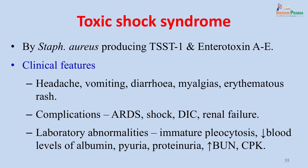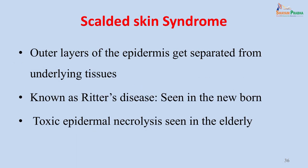Toxic shock syndrome is caused by Staphylococcus aureus producing toxic shock syndrome toxin-1 (TSST-1) and enterotoxins A–E. Clinical features include headache, vomiting, diarrhea, myalgia and erythematous rash. Complications can include acute respiratory distress syndrome, shock, DIC and renal failure. Laboratory abnormalities include immature pleocytosis, decreased albumin, pyuria, proteinuria, and increased blood urea nitrogen and CPK. In scalded skin syndrome, the outer layer of the epidermis gets separated from the underlying tissue — known as Ritter's disease in the newborn and toxic epidermal necrolysis in the elderly — and is very commonly seen as outbreaks in neonatal nurseries.